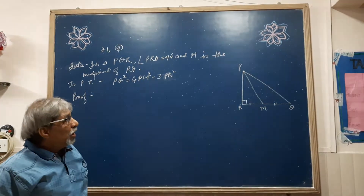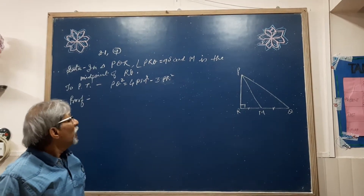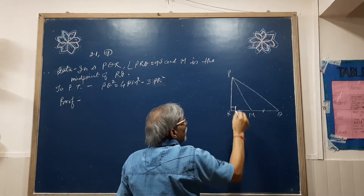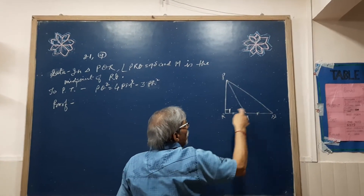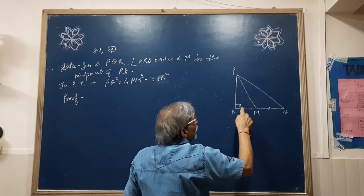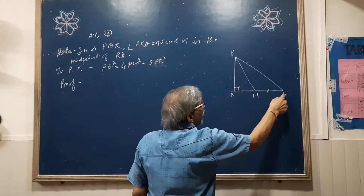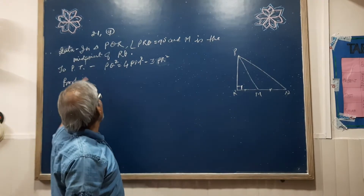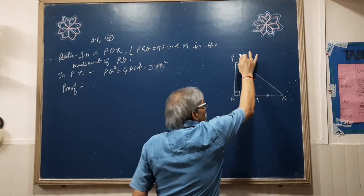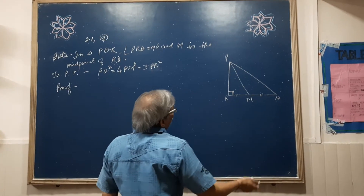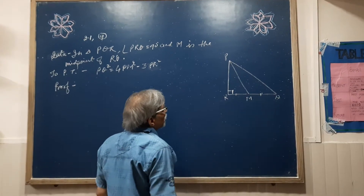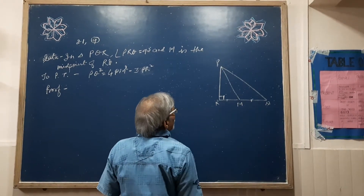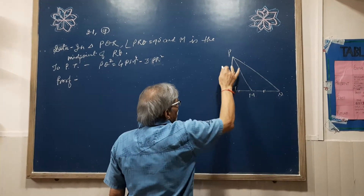The data is given with the figure. In triangle PQR, angle PRQ is 90 degrees. M is the midpoint of RQ. We have to prove that PQ squared is equal to 4PM squared minus 3PR squared.